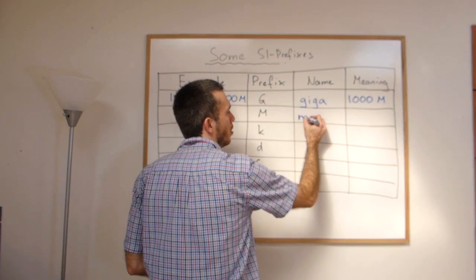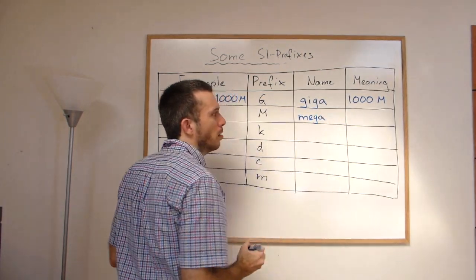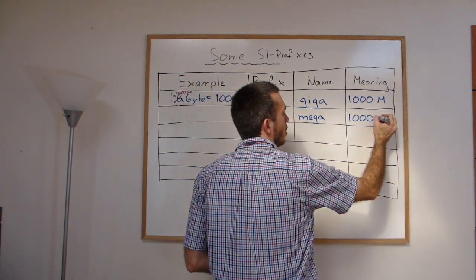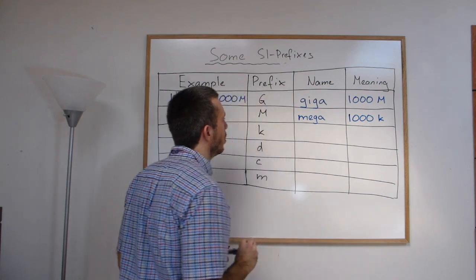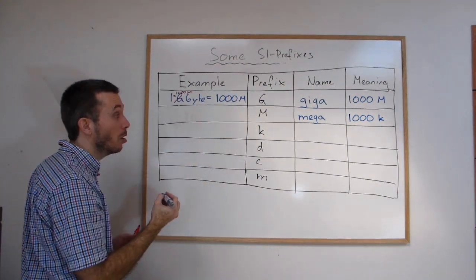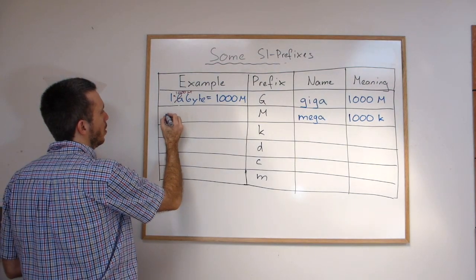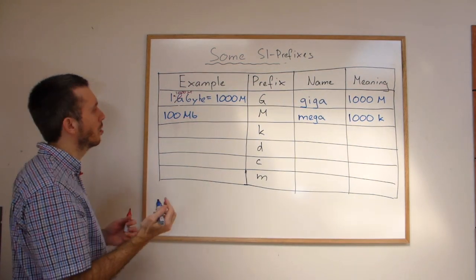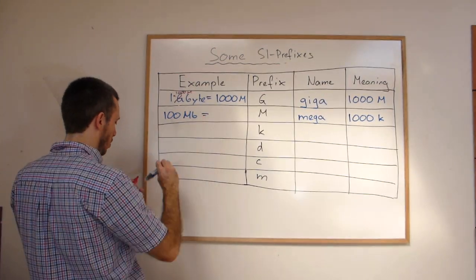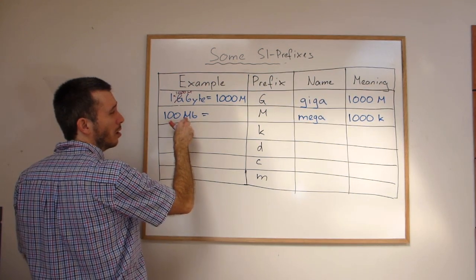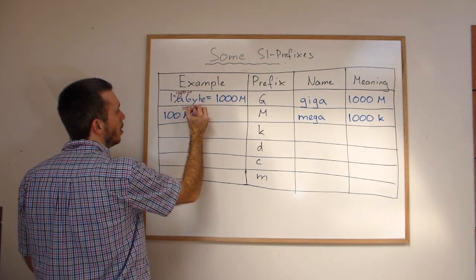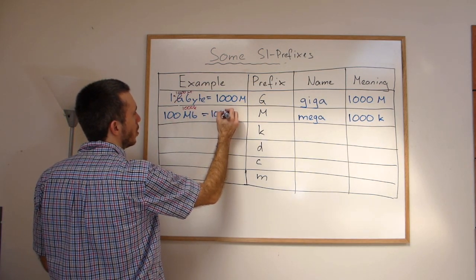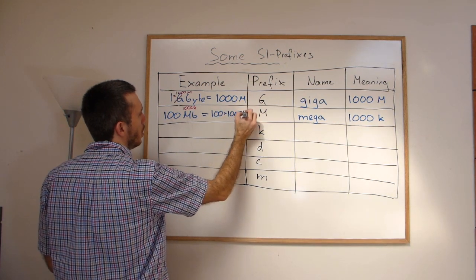The mega. One mega is 1000 kilo. So if we go again with computers, if you have let's say 100 megabytes of free space on your hard drive, it's not as much anymore. You can simply replace the mega here by 1000 k and you get that we have 100 times 1000 kilobytes.